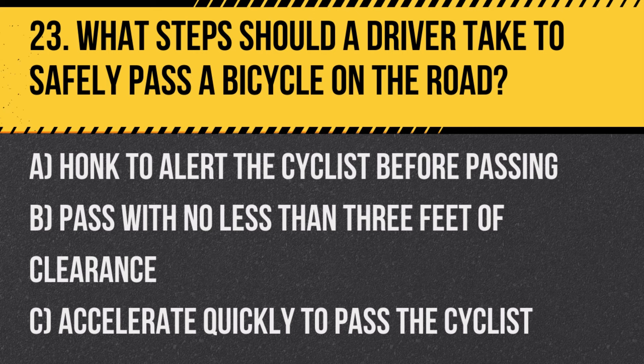Question 23: What steps should a driver take to safely pass a bicycle on the road? A. Honk to alert the cyclist before passing. B. Pass with no less than three feet of clearance. C. Accelerate quickly to pass the cyclist. Answer: B. Pass with no less than three feet of clearance. For safety, California law requires motorists to maintain a minimum distance of three feet when passing bicycles.